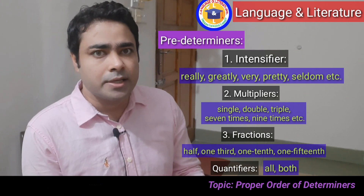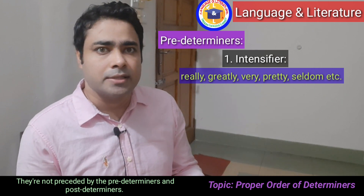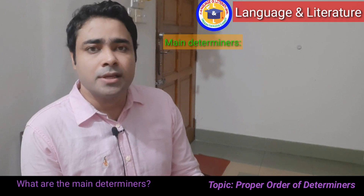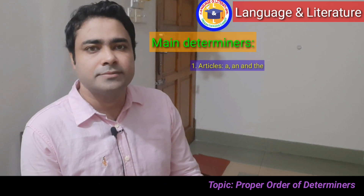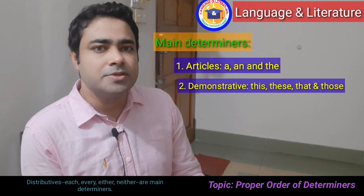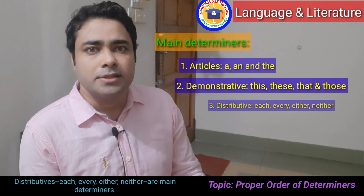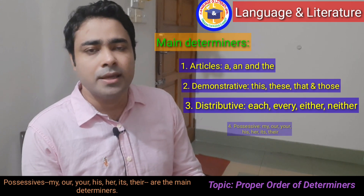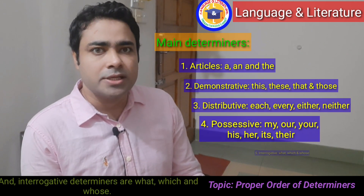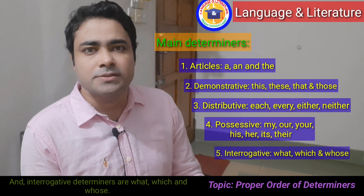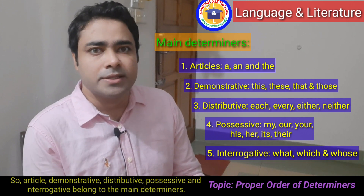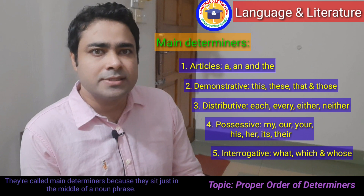After the predeterminers we have the main determiners. What are the main determiners? Articles — a, an, the — are main determiners. Demonstratives — this, these, that, those — are main determiners. Distributives — each, every, either, neither — are main determiners. Possessives — my, our, your, his, her — are main determiners. And interrogative determiners — what, which, whose — are also main determiners.